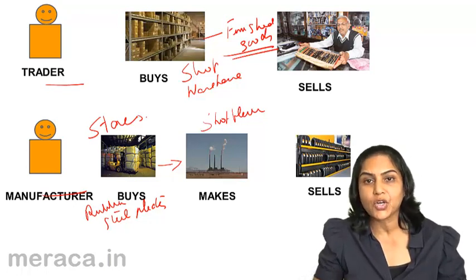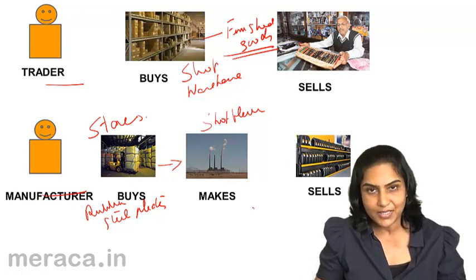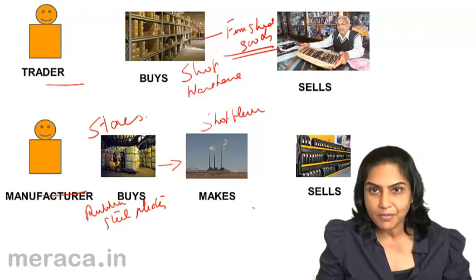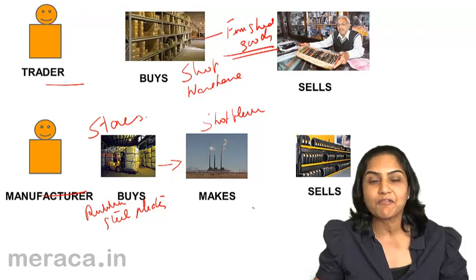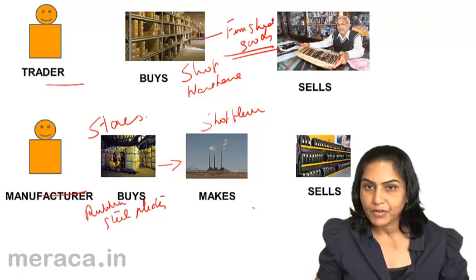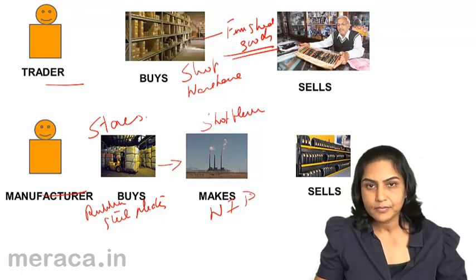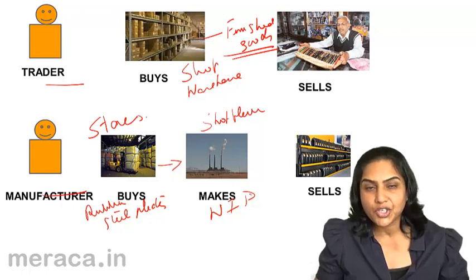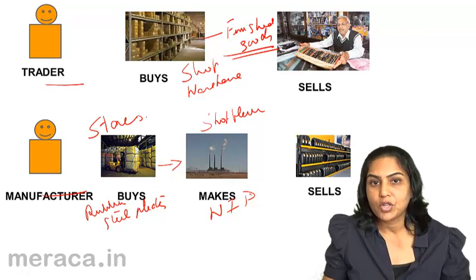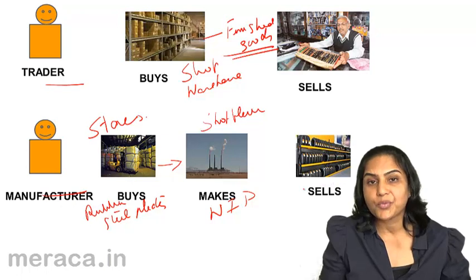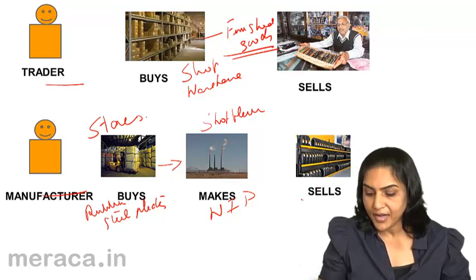Work goes on in the shop floor area of the factory. This particular process may take a few minutes, a few hours, a few days, or a few weeks. Therefore, on the shop floor at any point in time, there would be semi-finished or partly finished goods, which are nothing but work in progress. When goods are completed and the production process for a batch is over, those goods are transferred to the warehouse where finished goods are kept.